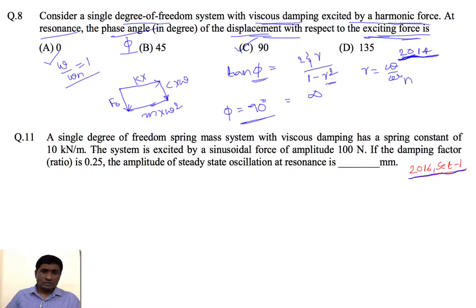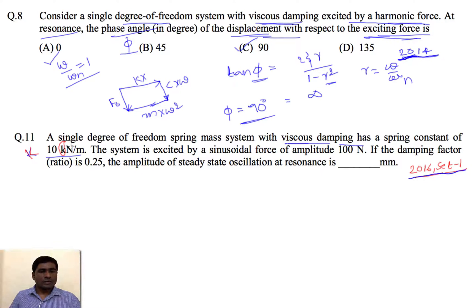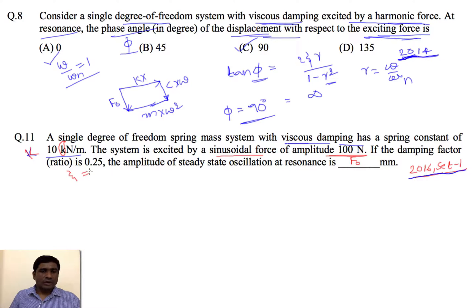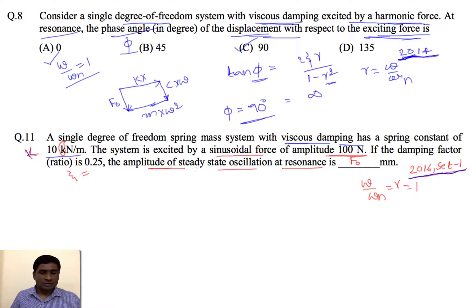The answer for the phase angle is 90 degrees. Now consider a single degree of freedom system with viscous damping, a spring constant k = 10 kN/m, excited by a sinusoidal force of amplitude F₀ = 100 N, and damping ratio ξ = 0.25. Since ω/ωₙ = 1 (resonance), we need to find the steady-state amplitude.